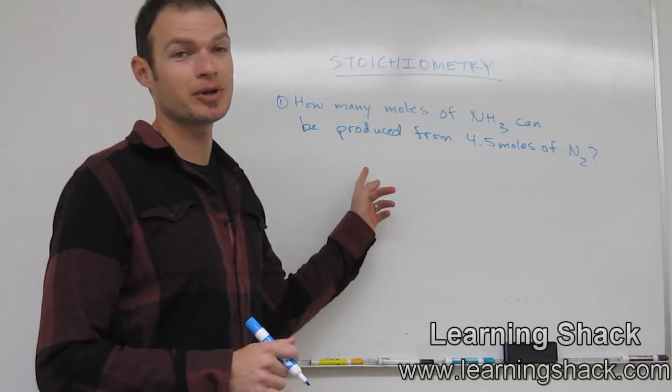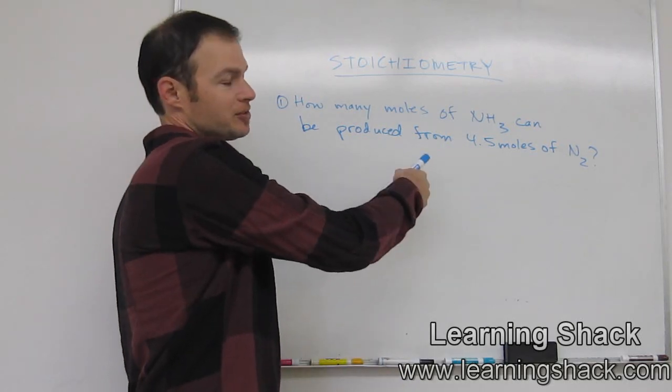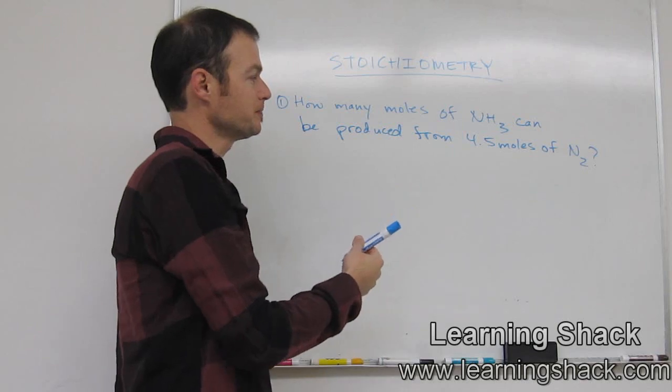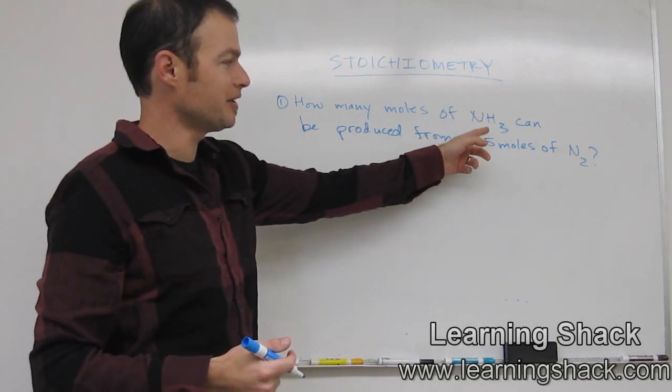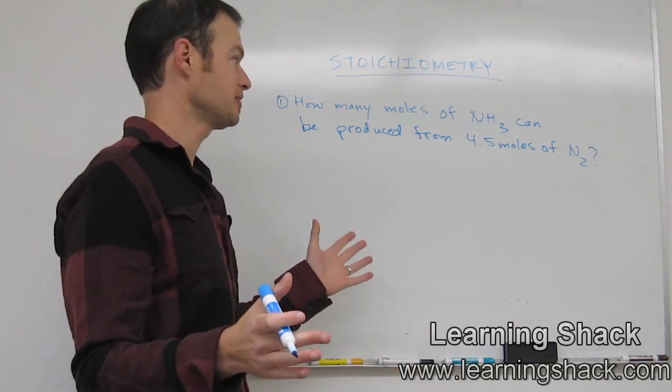Step one: we want to write our chemistry equation. Our equation is going to involve what we have in the word problem. As you can see, we have the NH3, we have the N2. We've got to figure out if there's anything else missing. So let's start and write this down.